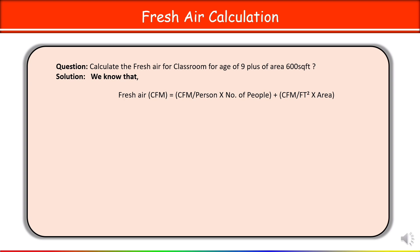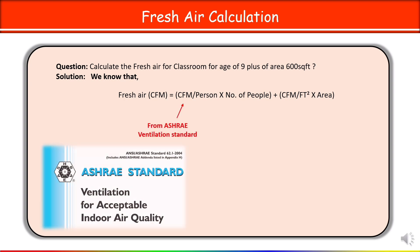The formula is CFM per person times number of people, plus CFM per square feet times area. The CFM per person value comes from ASHRAE ventilation standard 62.1 — you will get the outdoor air per person value from there. The number of people is determined as per the furniture layout; you will get this from the AutoCAD file from the architect. If desks, benches, or tables are present, you can easily identify how many people are there.